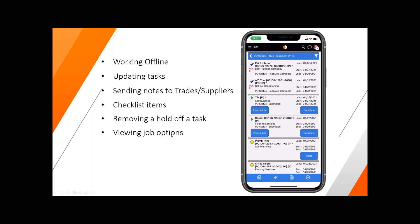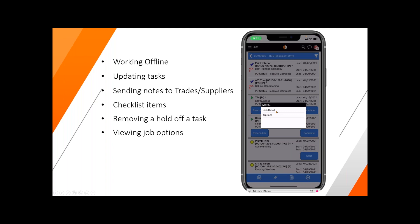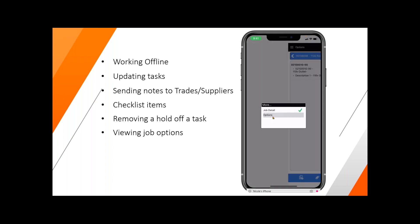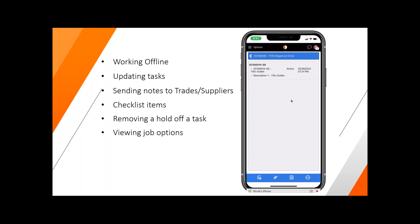From here we can also take and view job options. At the very bottom of the screen there are three dots. When I click on those three dots, I can see my job detail — I can get into all of that information on the customer, their phone numbers, some job information. If I click those three dots again and choose job options, this is going to present, just like it normally would, all of the options that the customer has added to this particular job, or even if it's a spec home, all the options your team has added. We've got the date it was added and a timestamp, just like you'd normally be presented with.